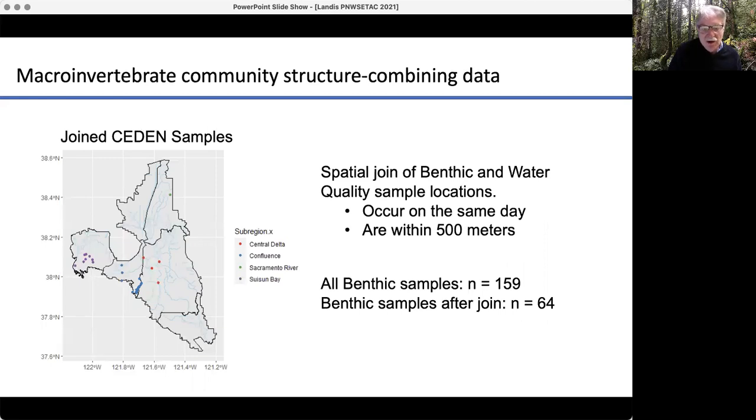We also have macroinvertebrate community structure information on most, not all of our risk regions. We look at the benthic and water quality, and the benthic samples, and the species that are in that.